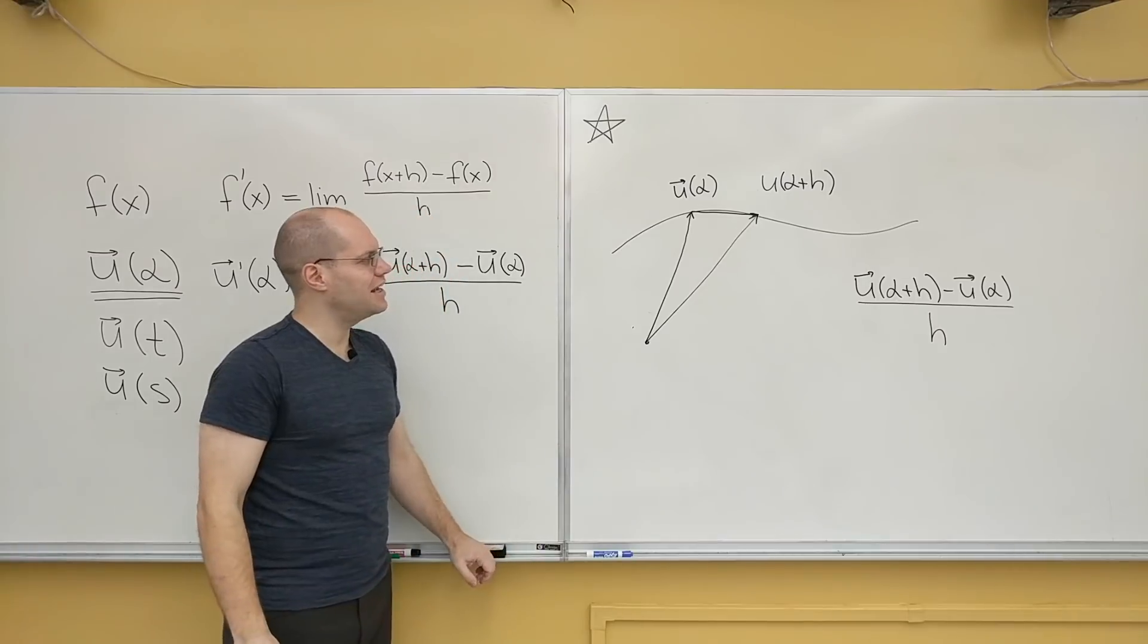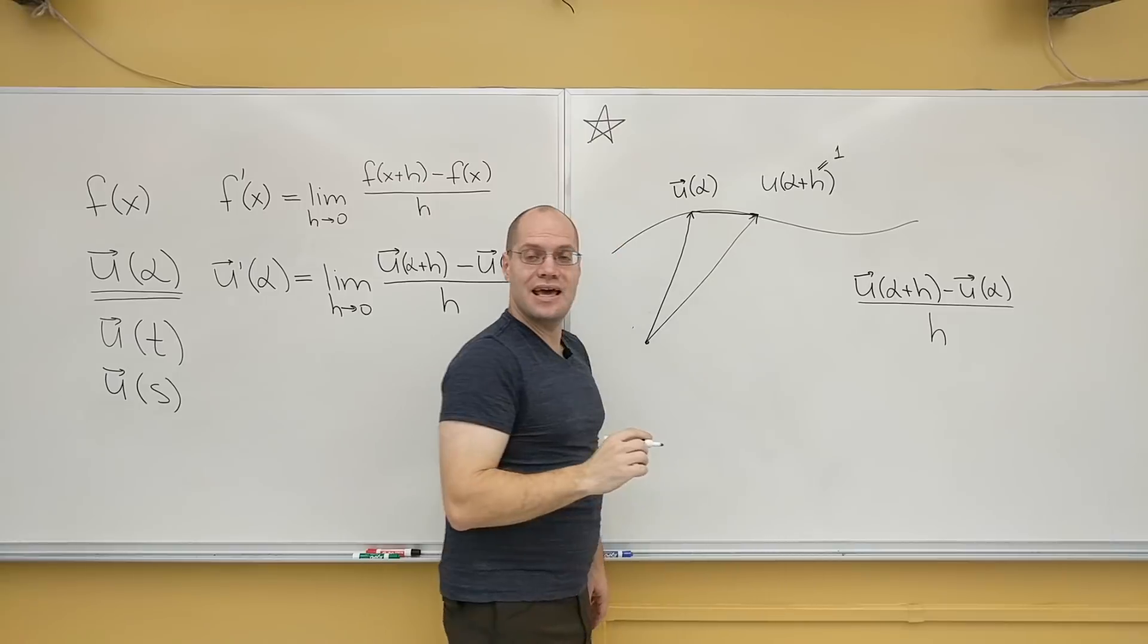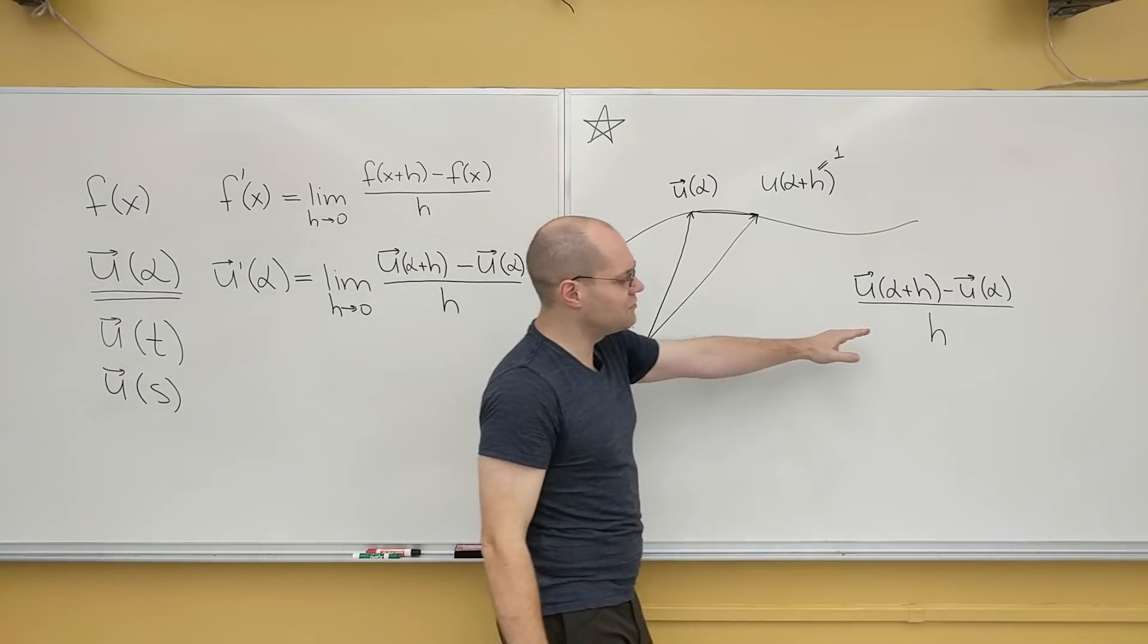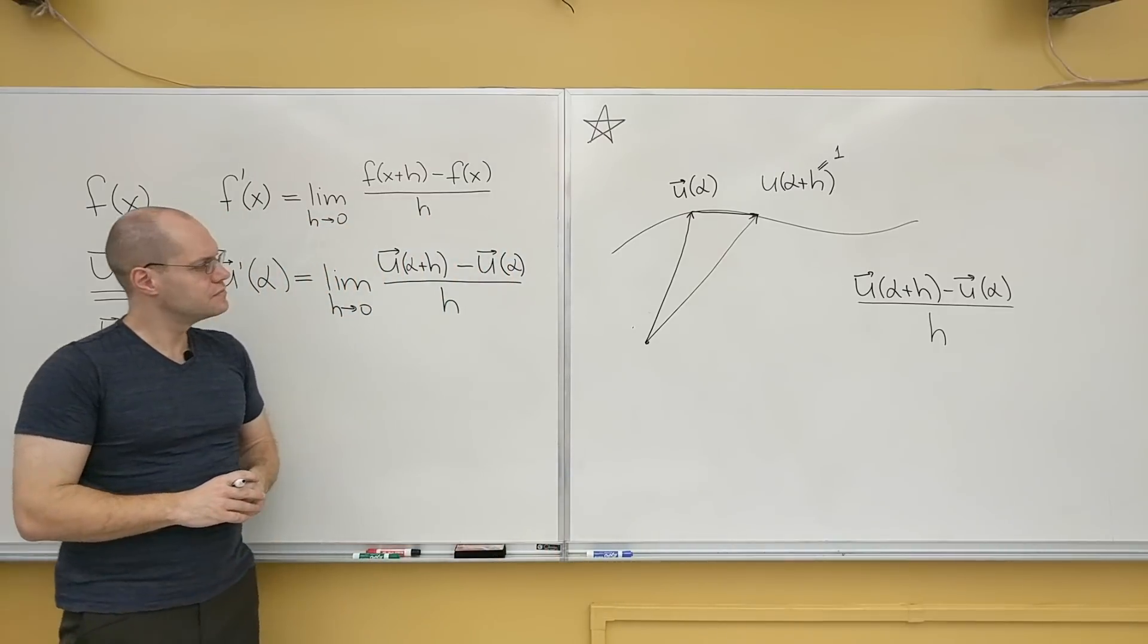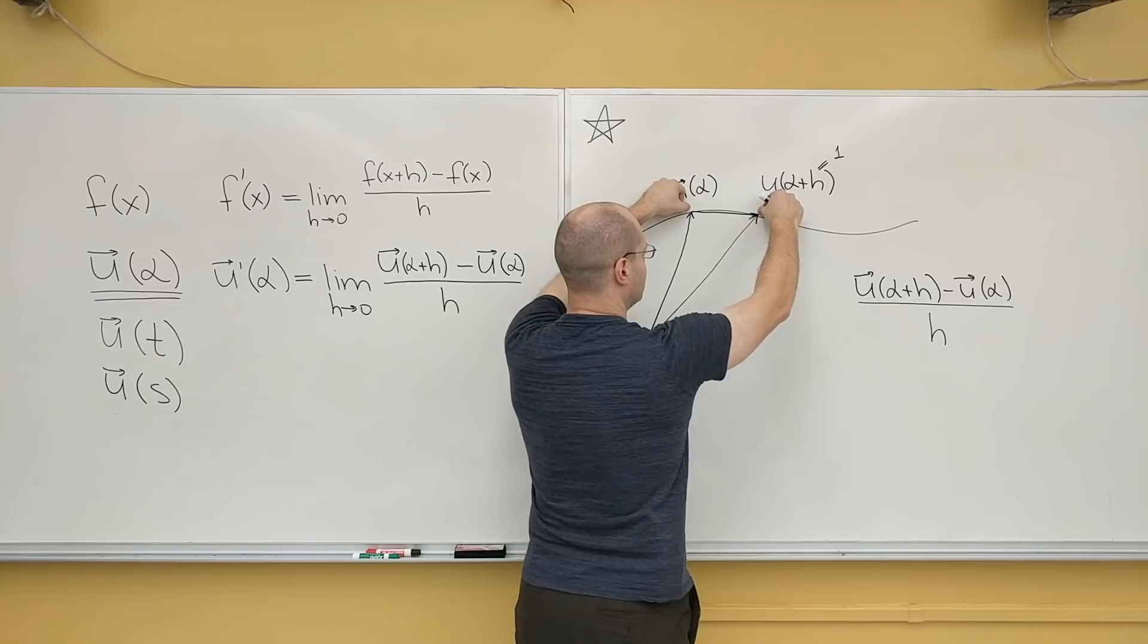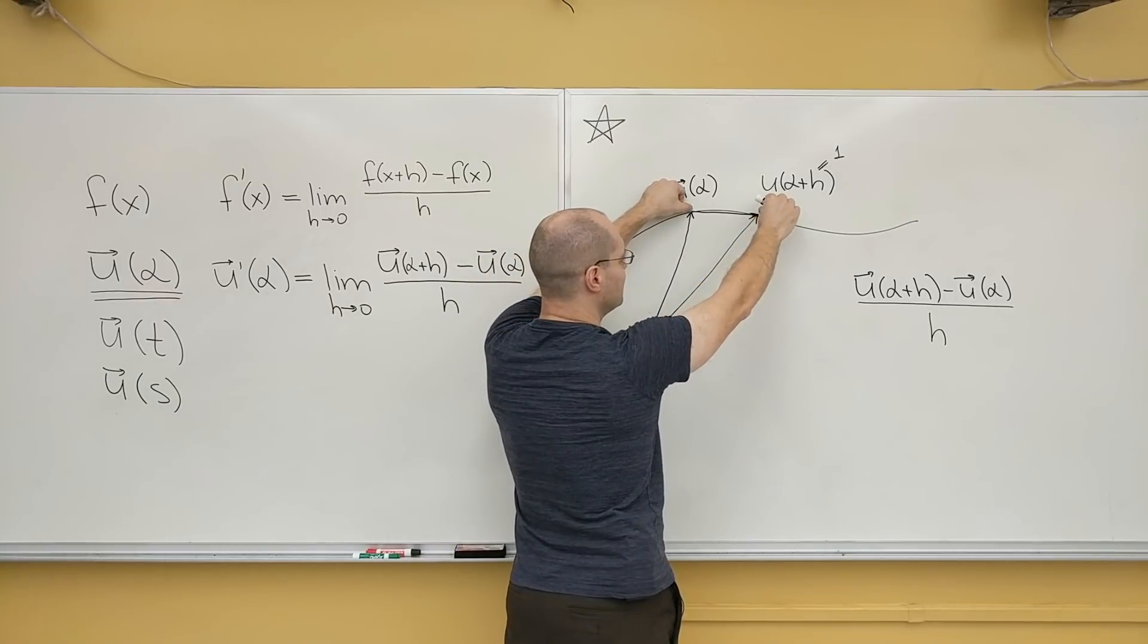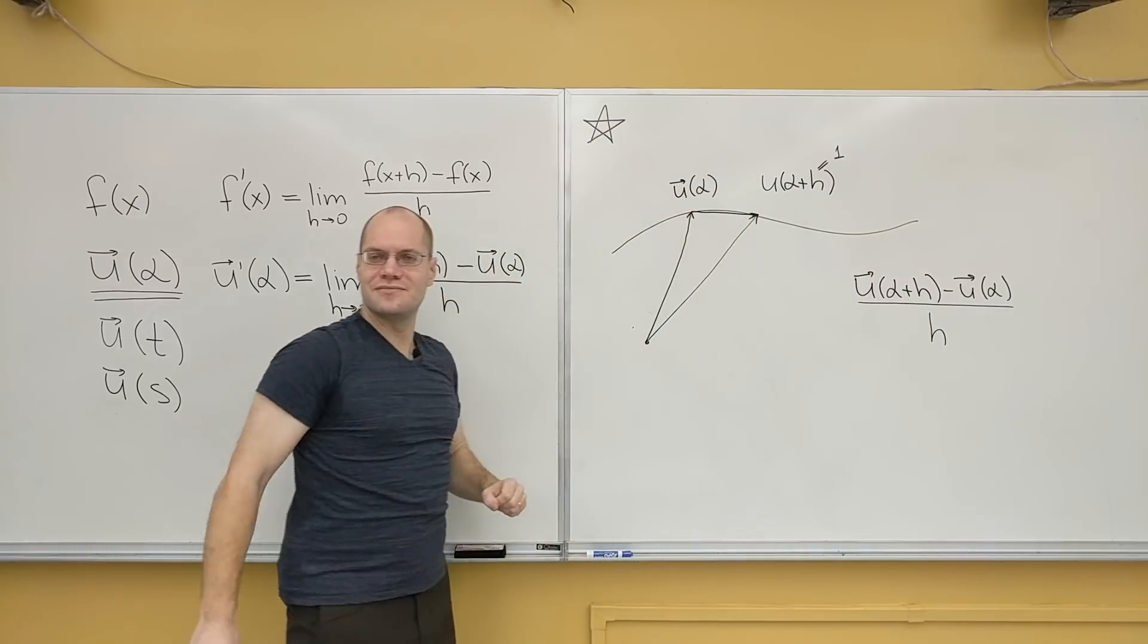Let's assume that in this case, this corresponds to h equals 1. I will take h equals 1 half and then 1 tenth in just a moment. So right now we just have to divide by 1. So we have this value right here. By this value, I mean this vector. So yes, it actually lives here when we're doing vector algebra, but it's so much more convenient to draw it here.